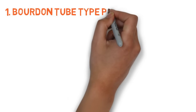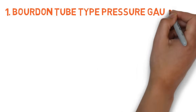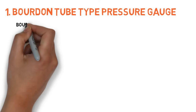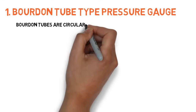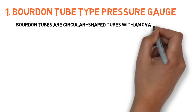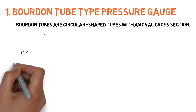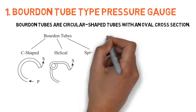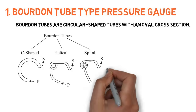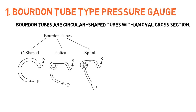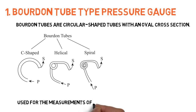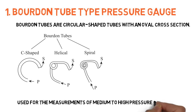Bourdon tube type pressure gauge. Bourdon tubes are circular shaped tubes with an oval cross-section. Bourdon tubes are manufactured in three different forms: C type, spiral type, and helical type. Bourdon tube sensing elements are used for the measurements of medium to high pressures.